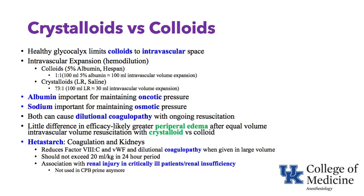Comparing crystalloids to colloids: with a healthy glycocalyx, colloids stay inside the blood vessel. If the glycocalyx is damaged, colloids can leak into the interstitium. Colloids are much more effective at expanding the intravascular space. Giving 100 milliliters of 5% albumin results in approximately 100 milliliters of intravascular volume expansion. In contrast, giving 100 milliliters of lactated Ringer's results in only about one-third staying intravascularly. So 100 milliliters of 5% albumin will expand the intravascular space more and cause greater hemodilution.